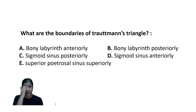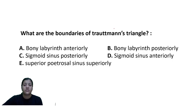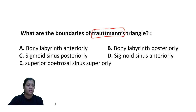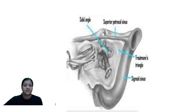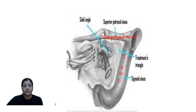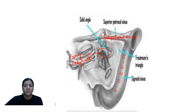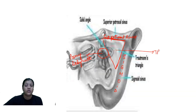What are the boundaries of Trautmann's triangle? First you need to know what Trautmann's triangle is. Trautmann's triangle is an area bounded by the superior petrosal sinus superiorly, the sigmoid sinus posteriorly, and the bony labyrinth anteriorly. This triangle is your Trautmann's triangle.